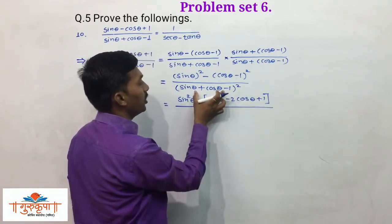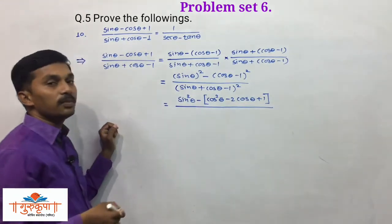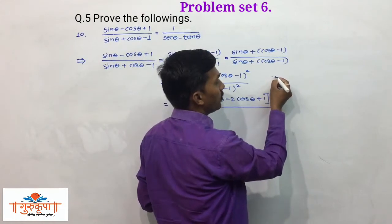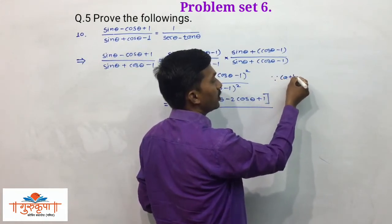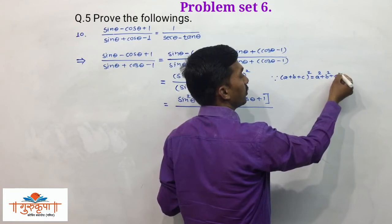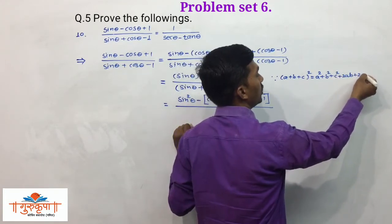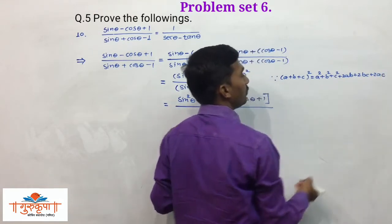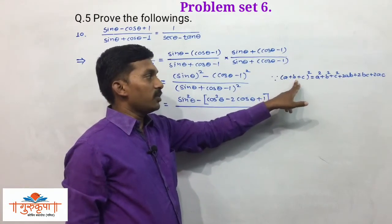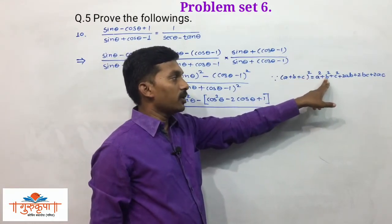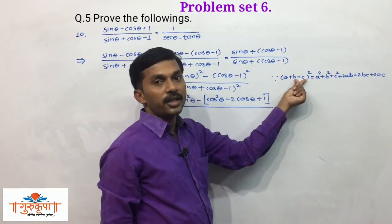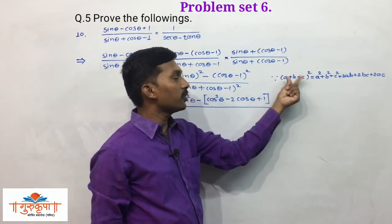For the denominator, we write the square expansion of the three-term expression (a + b + c)². The expansion is a² + b² + c² + 2ab + 2bc + 2ac. So for (sinθ + cosθ - 1)², you write sin²θ + cos²θ + 1 plus twice the products of each pair of terms.